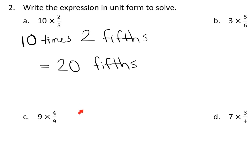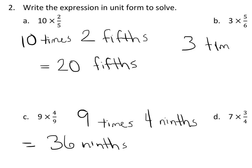Alright, let's do a couple more. The next one, 9 times 4 ninths equals 36 ninths. And 3 times 5 sixths equals 15 sixths.